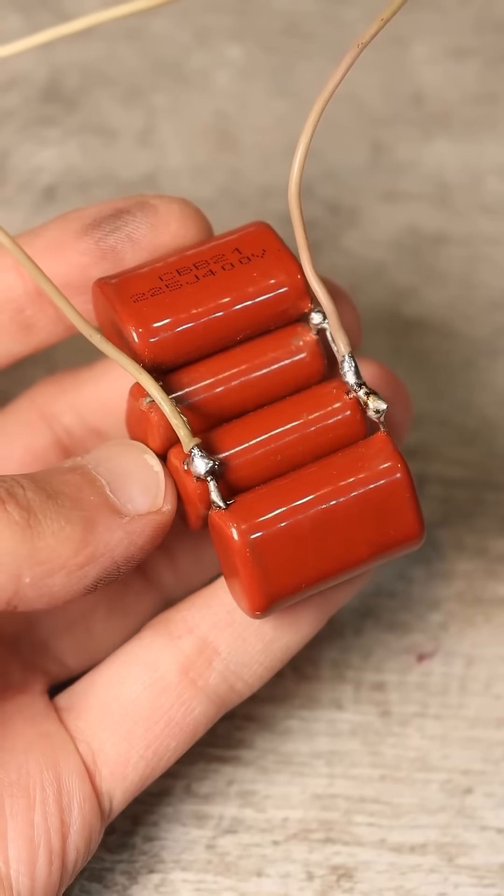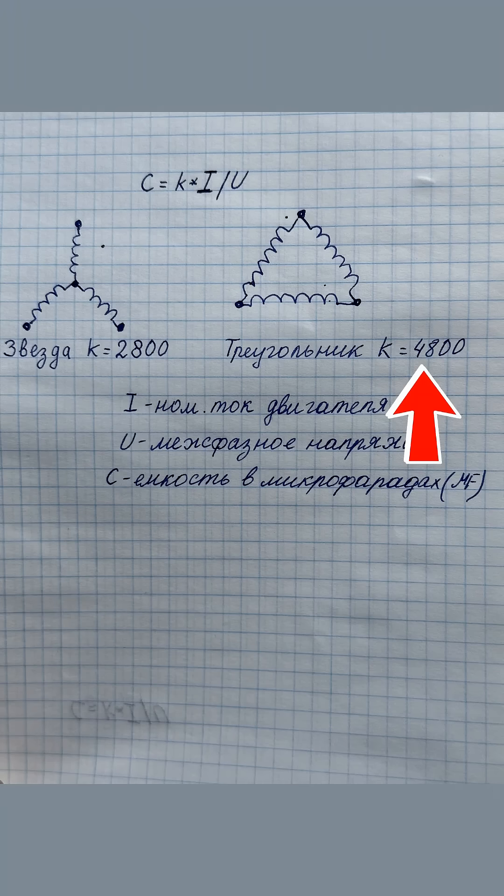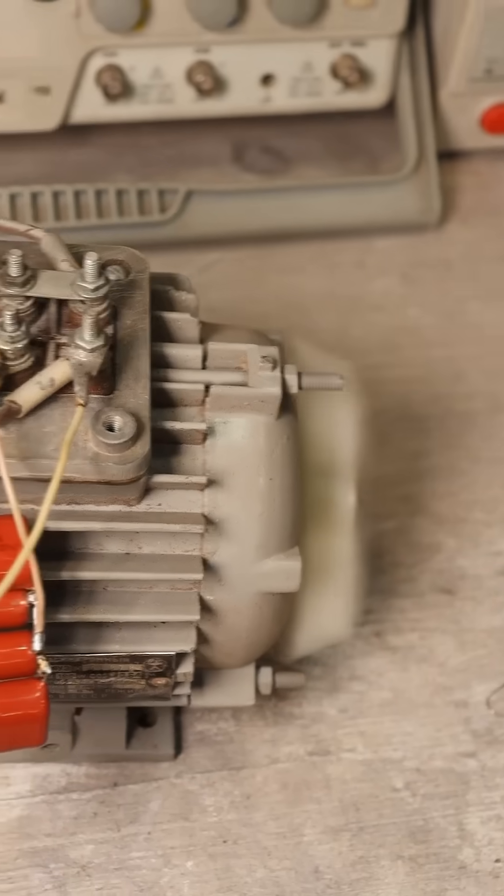The capacity of the running capacitor is calculated using the specified formula where k, the coefficient, has a value of 2800 for star and 4800 for delta, along with the rated current of the motor in amps. The phase voltage in our case is 220 volts.